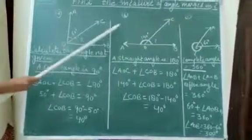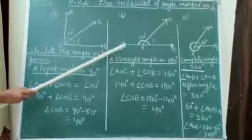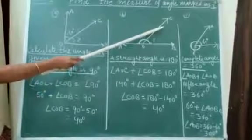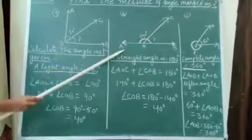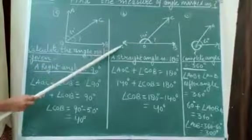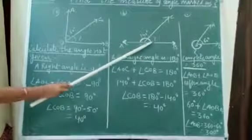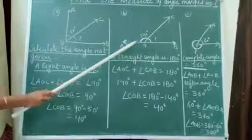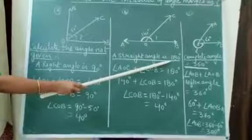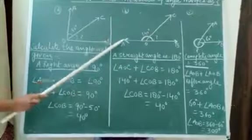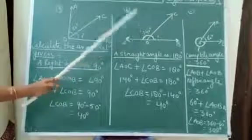Next, question number B. See, in this figure, find angle COB. In this figure, AOB is a straight angle. A straight angle measures 180 degrees. Angle AOC is given as 140 degrees.